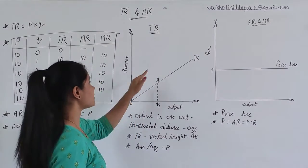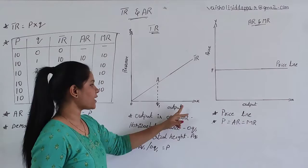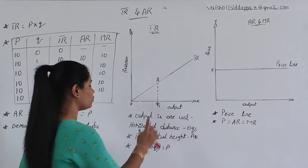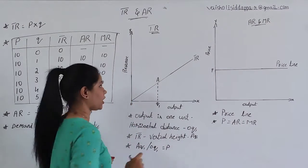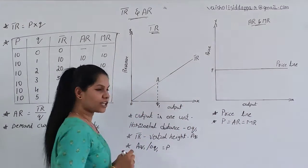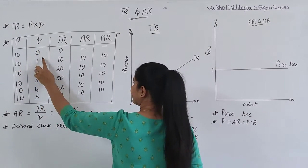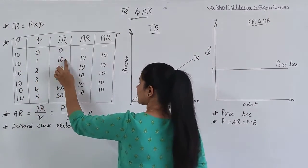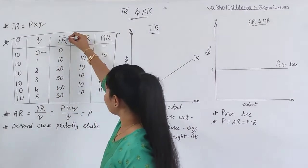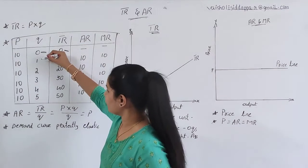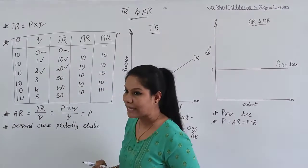Here you have the first diagram, which talks about TR only. In the x-axis you have output, and in the y-axis you have revenue. The curve you are seeing, which is positive in slope shape, is the TR curve — the total revenue curve. As quantity increases, total revenue is also increasing: if quantity is 0, TR will be 0; if quantity increases, total revenue also increases.